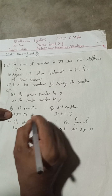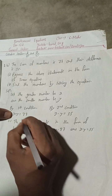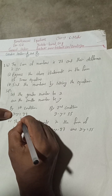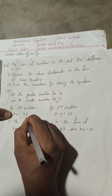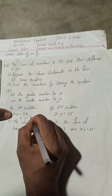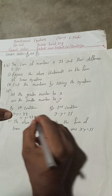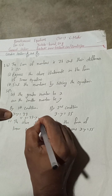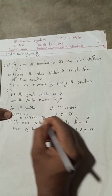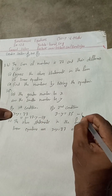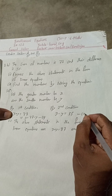To solve this, from equation one we get x is equal to 77 minus y. This is equation one. Equation two is x minus y equals 55.